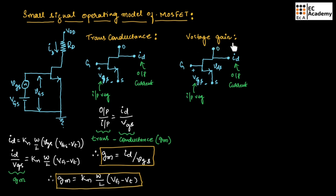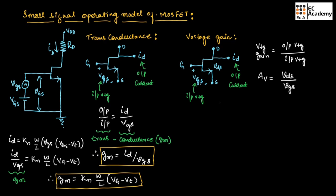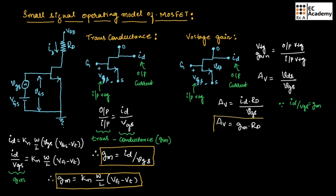Now let us understand voltage gain. Voltage gain AV equals output voltage divided by input voltage. From this circuit, VGS is the input voltage and VDS is the output voltage. Therefore AV = VDS/VGS. We can write VDS = ID · RD, so AV = (ID · RD) / VGS. Since ID/VGS = GM, we can write gain AV = GM · RD. This is the expression for voltage gain.